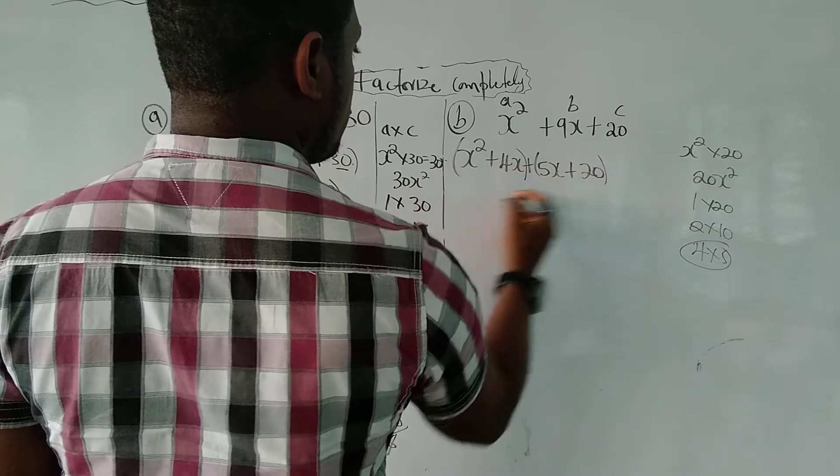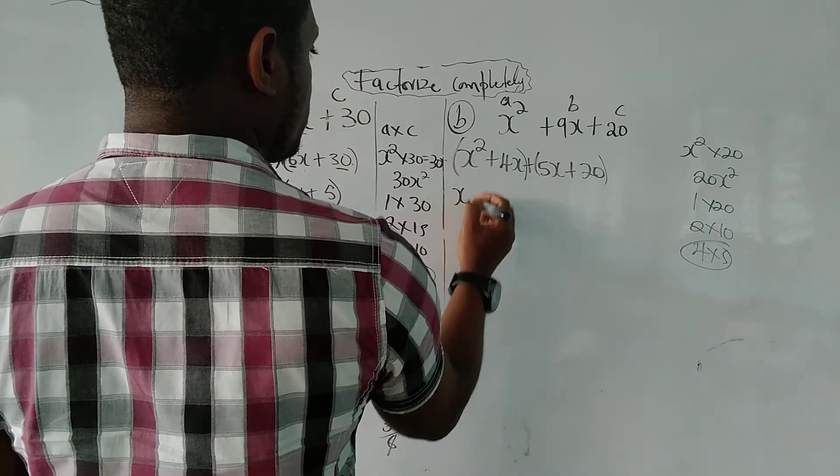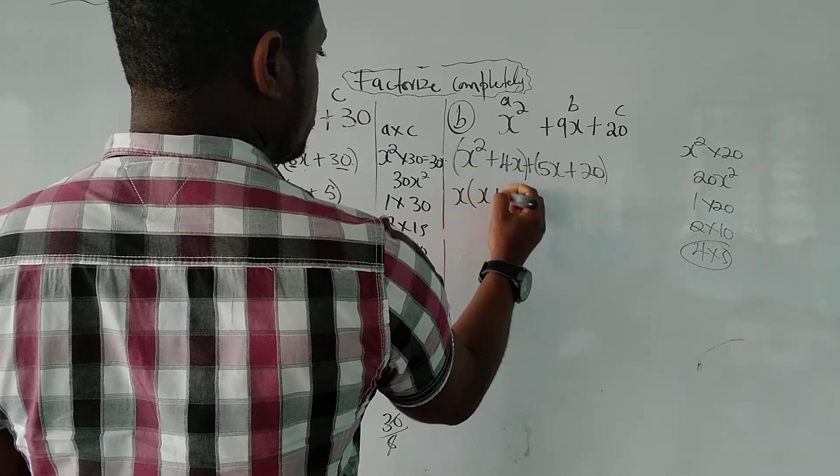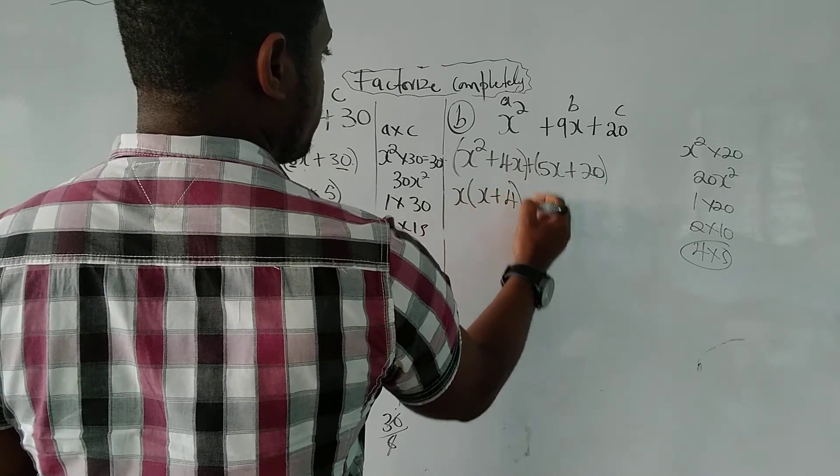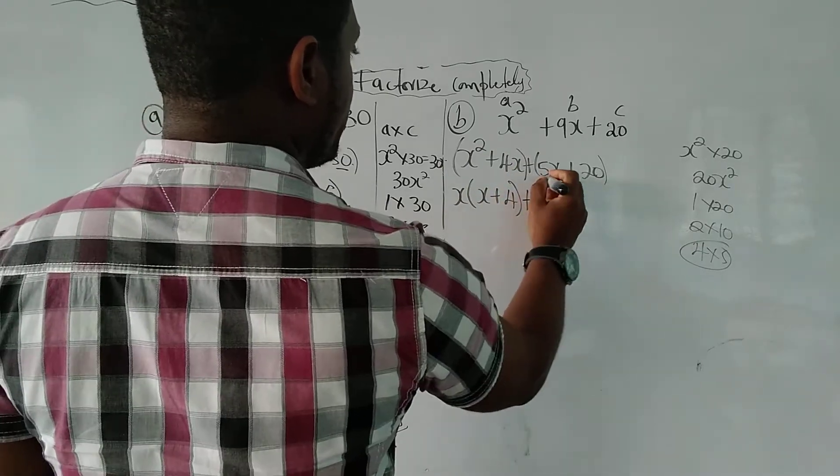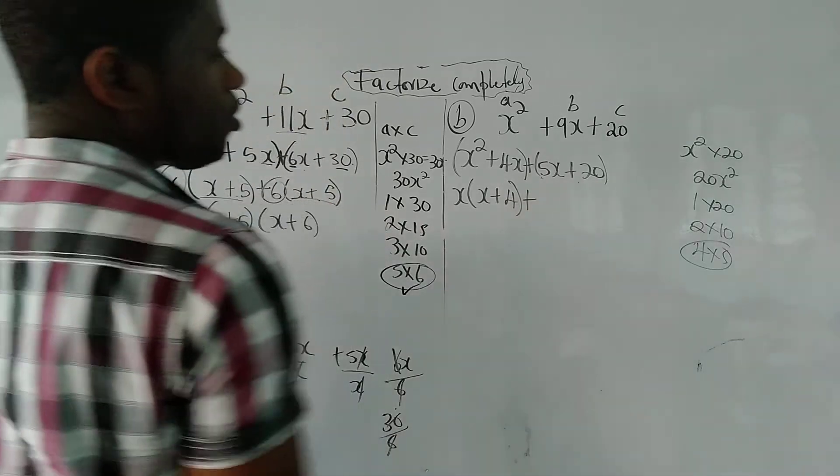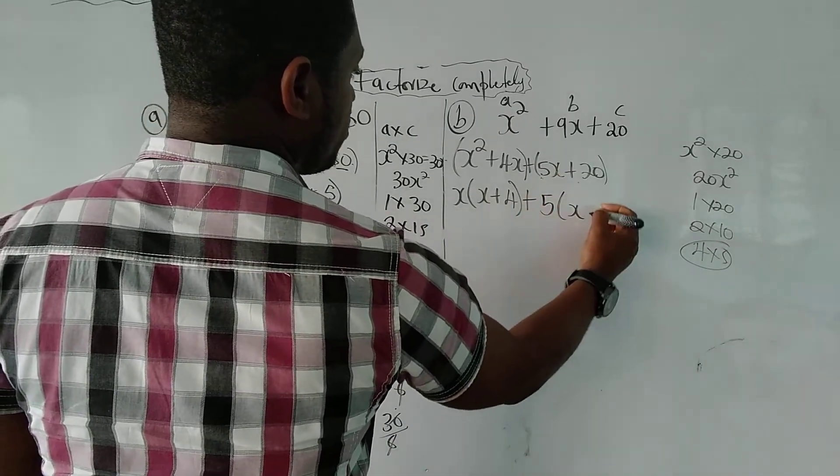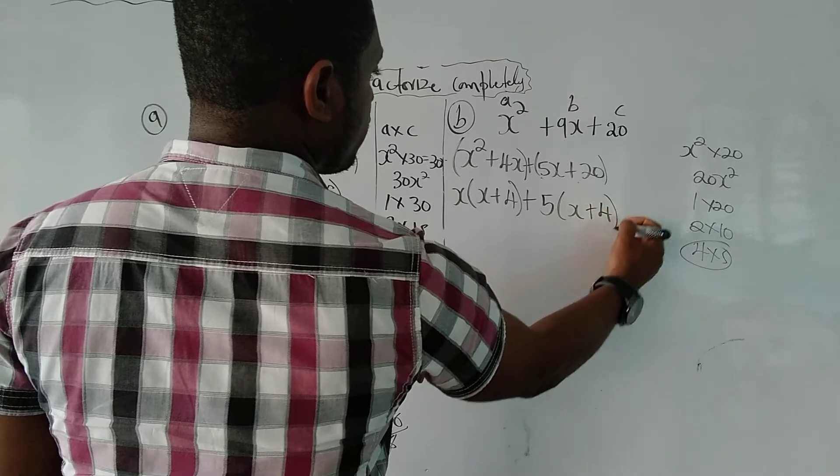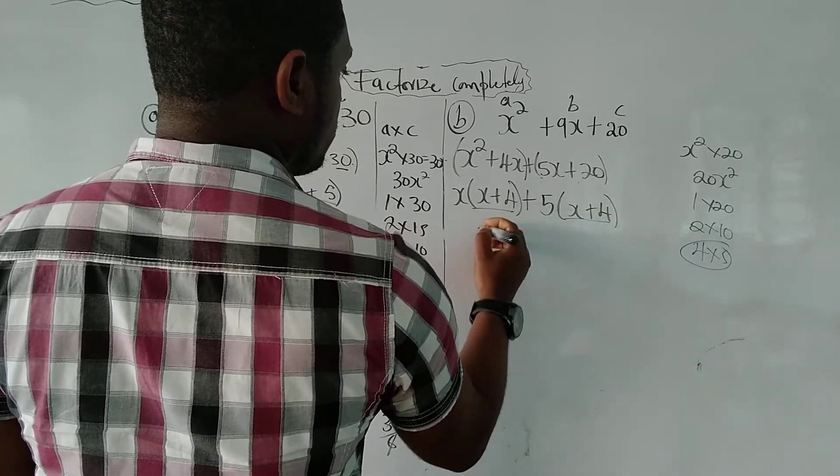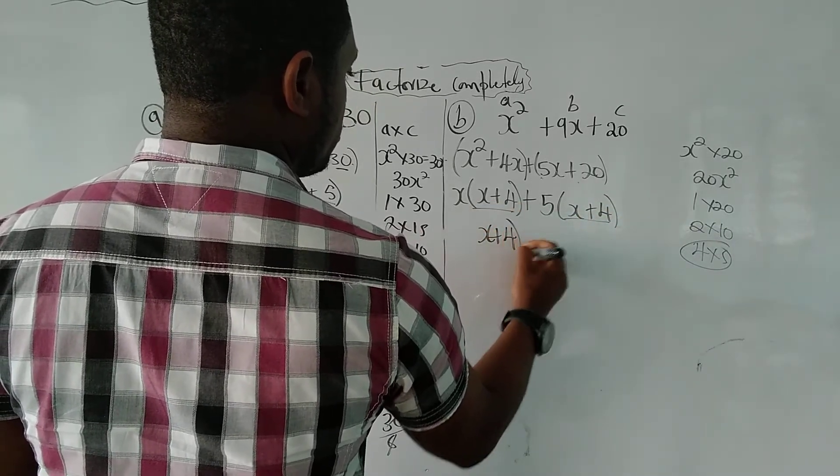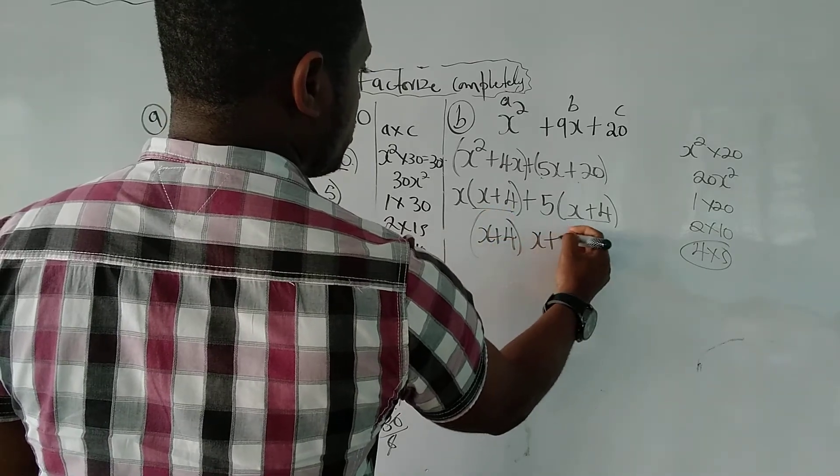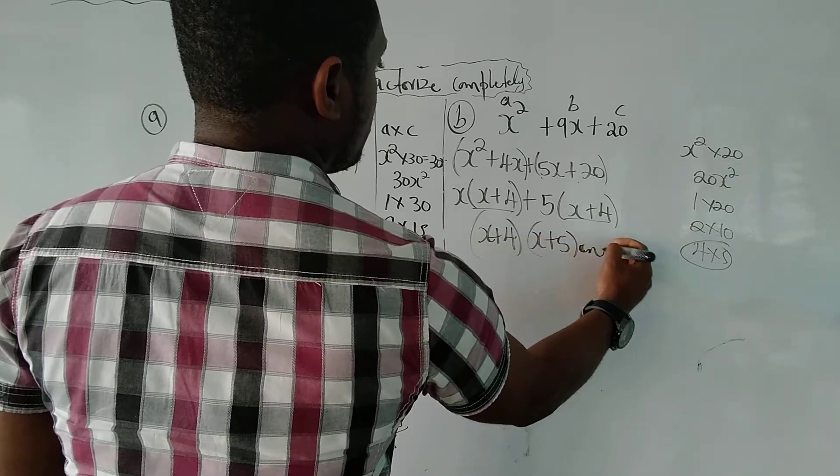Now, bracket it out. So take out the highest common factor. x. x into x, x into 4, leaves x plus 4. First, highest number that can go into 5 and 20 without a remainder is 5. 5 into 5x is x, 5 into 20 is 4. See there? And what's outside. And that is our answer: x plus 4 times x plus 5.